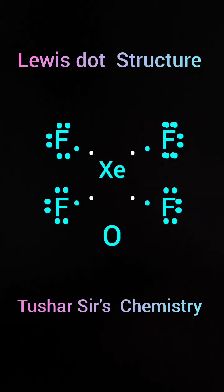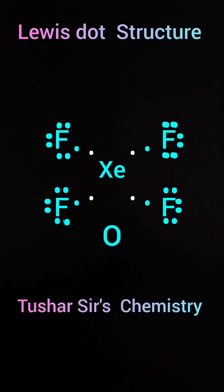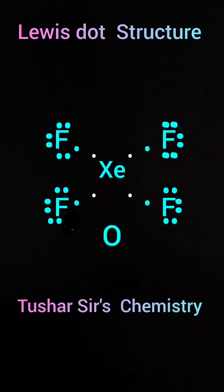So here each fluorine will show one electron to xenon. So also xenon will show one electron to each fluorine. So four dots will be put before four fluorine atoms.